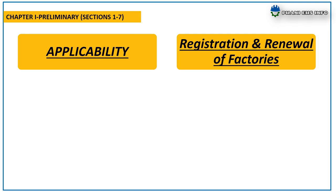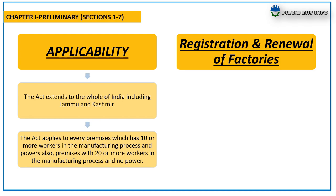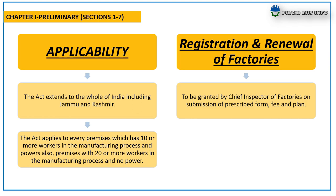Chapter 1 Preliminary covers sections 1 to 7. Regarding applicability, the act extends to the whole of India including Jammu and Kashmir. The act applies to every premises with 10 or more workers in the manufacturing process with power, and premises with 20 or more workers in the manufacturing process without power. Registration and renewal of factories is to be granted by the Chief Inspector of Factories on submission of the prescribed form, fee and plan.